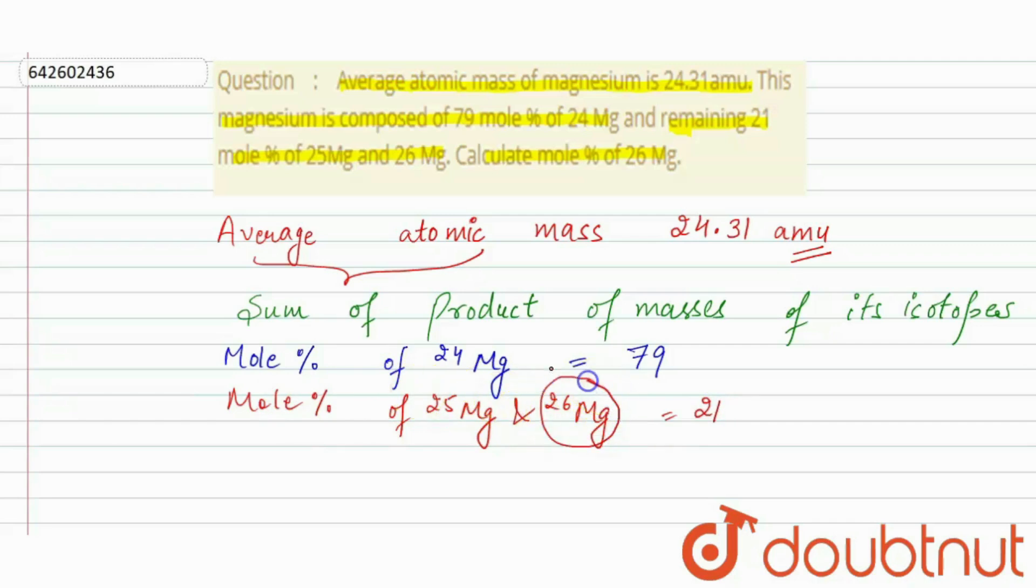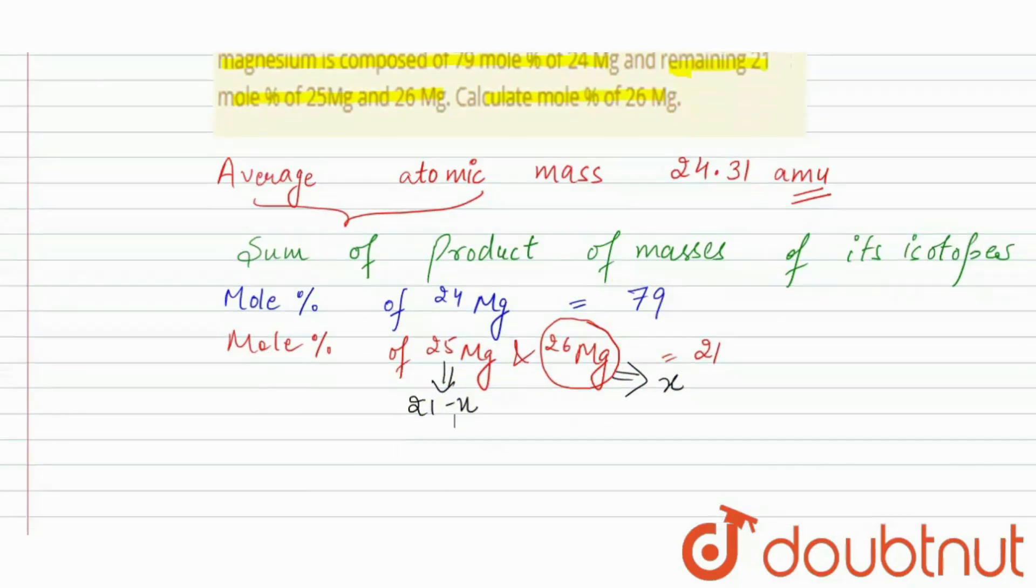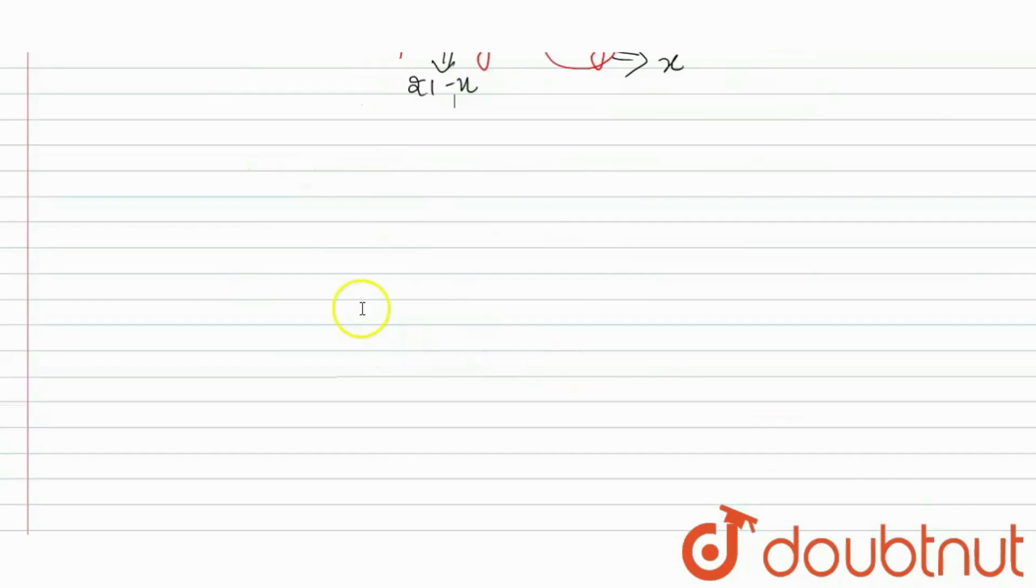now let the mole percentage for 26 magnesium be x and for 25 magnesium it will be 21 minus x. Now we know that the average atomic mass is 24.31.